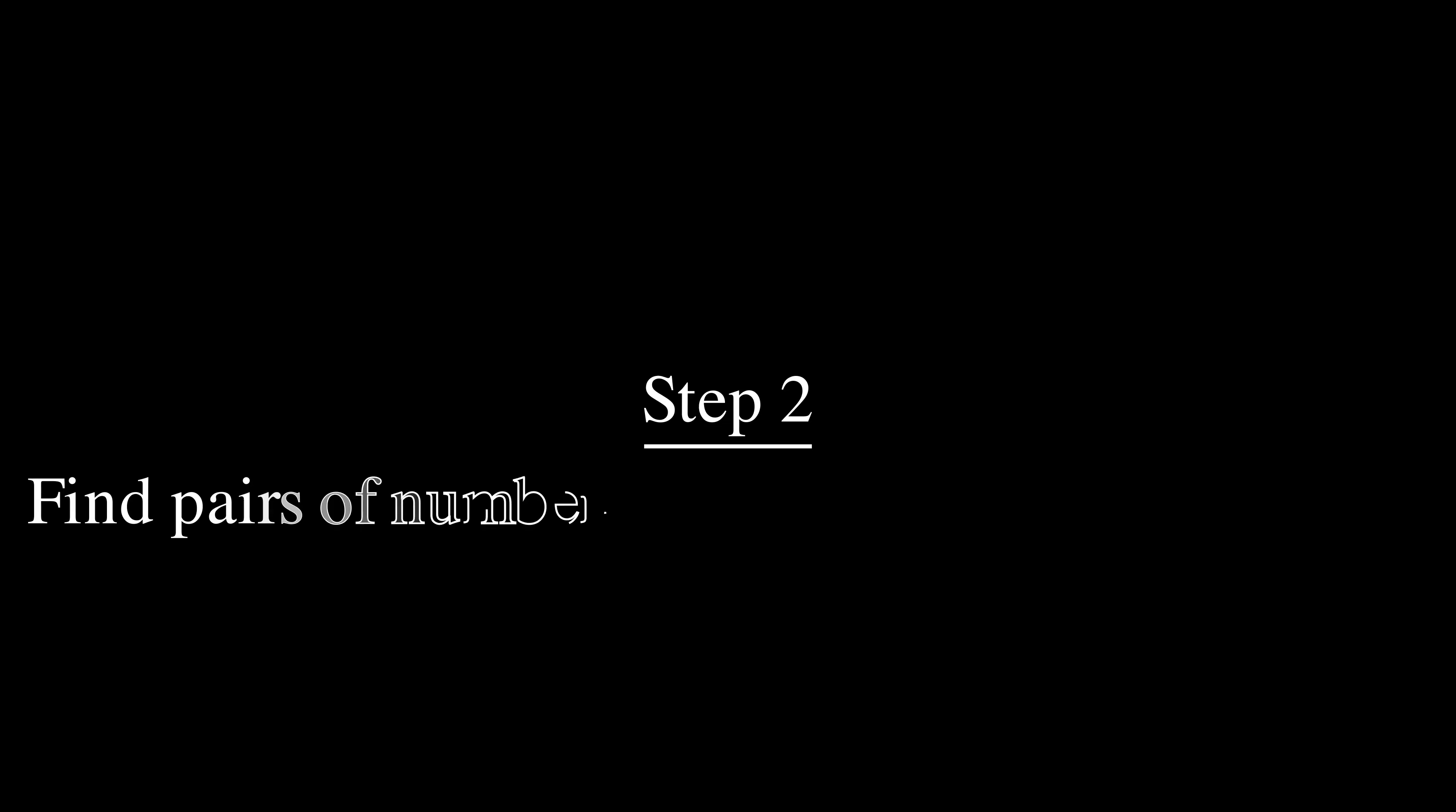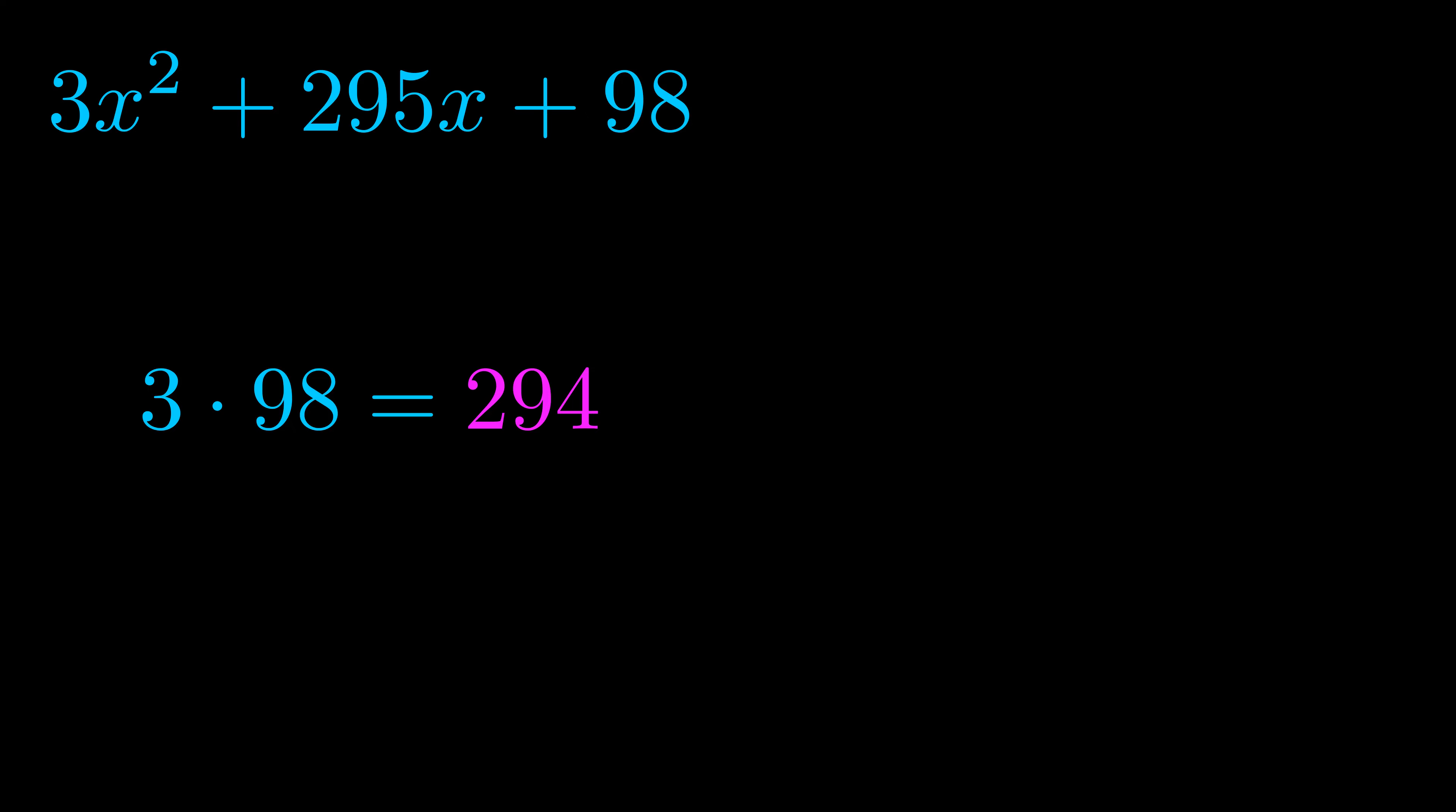Step two is to try to find all of the pairs which multiply to this number. Now it turns out you don't really need to find all of them but go ahead and write down as many numbers as you can that multiply to the magenta value for now. Pause the video and resume when you're ready to continue.